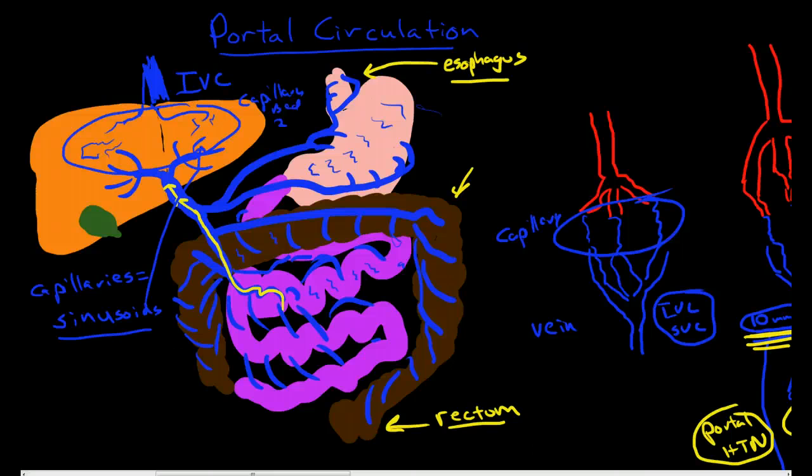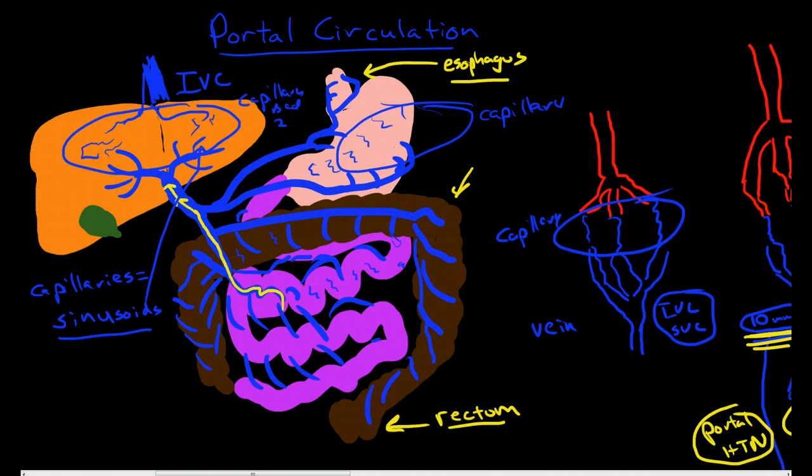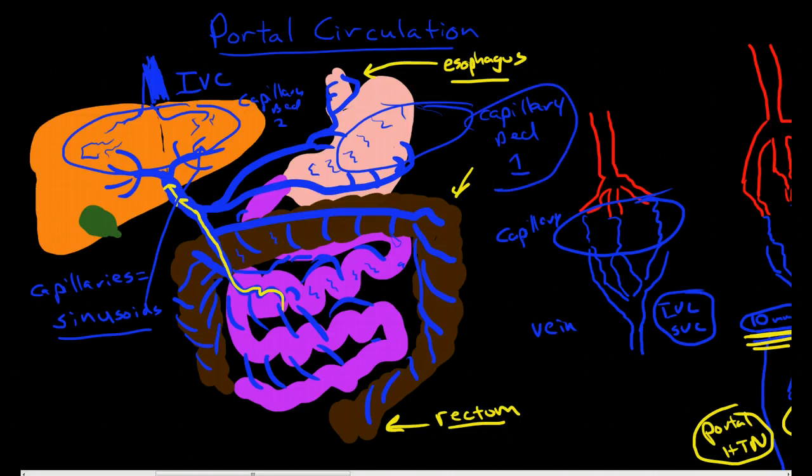So this here is capillary bed number two, the sinusoid. And capillary bed number one is here in the gut, the stomach, the entire GI tract. And then we have the portal vein in the middle.